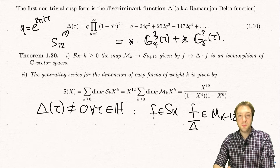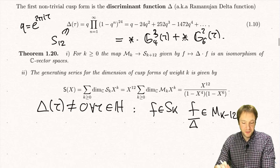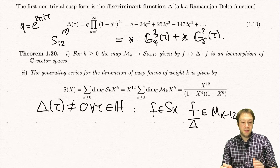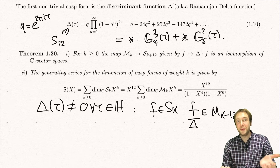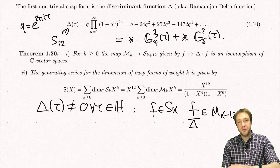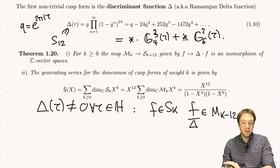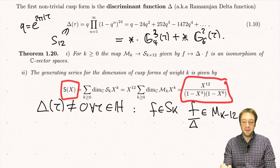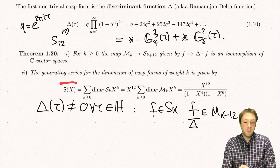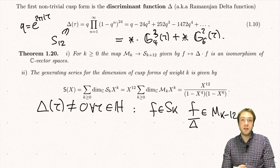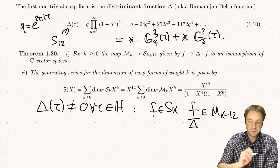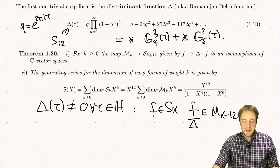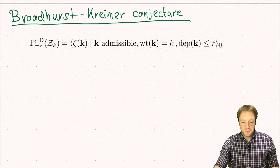That was a short crash course in modular forms. The reason we introduced this is that we will use Eisenstein series in the next subsection, but here the goal was to introduce the generating series of cusp forms, which will now appear in the refined dimension conjecture due to Broadhurst and Kreimer for multiple zeta values. We now go back to multiple zeta values and first introduce some notation.